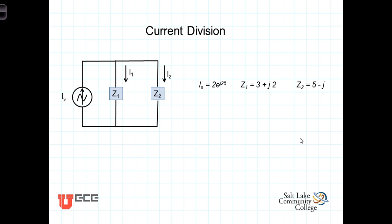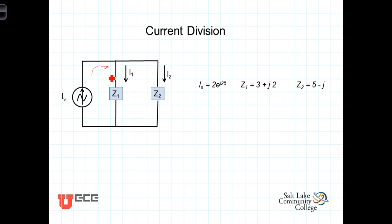The concept of current division applies in an analogous way to what we saw when we had two resistances in parallel. So we have this current I_s flowing into a node. Part of that current is going to flow through Z1 and the other part will flow down into Z2, and of course I1 plus I2 must equal I_s.